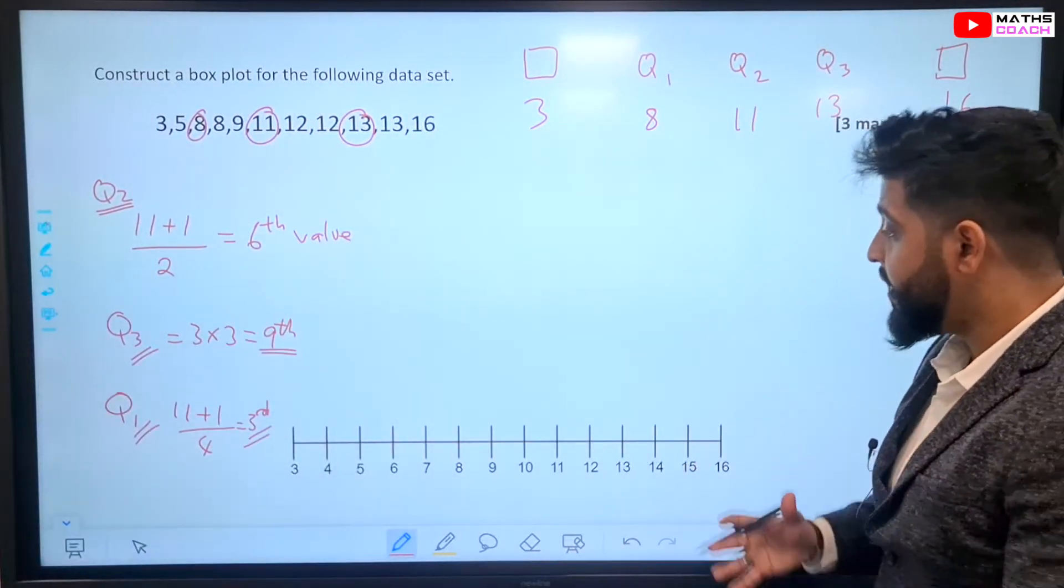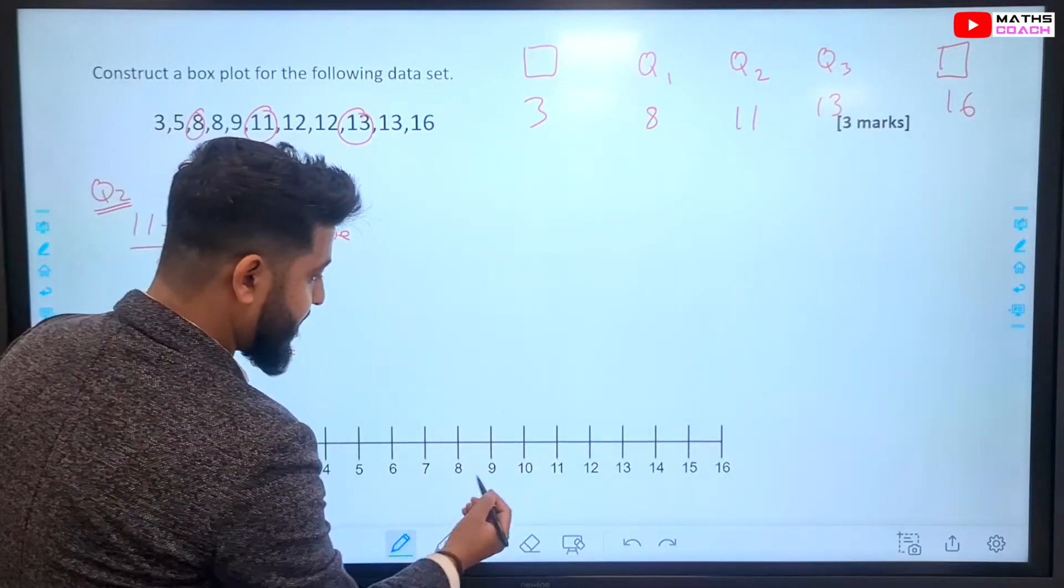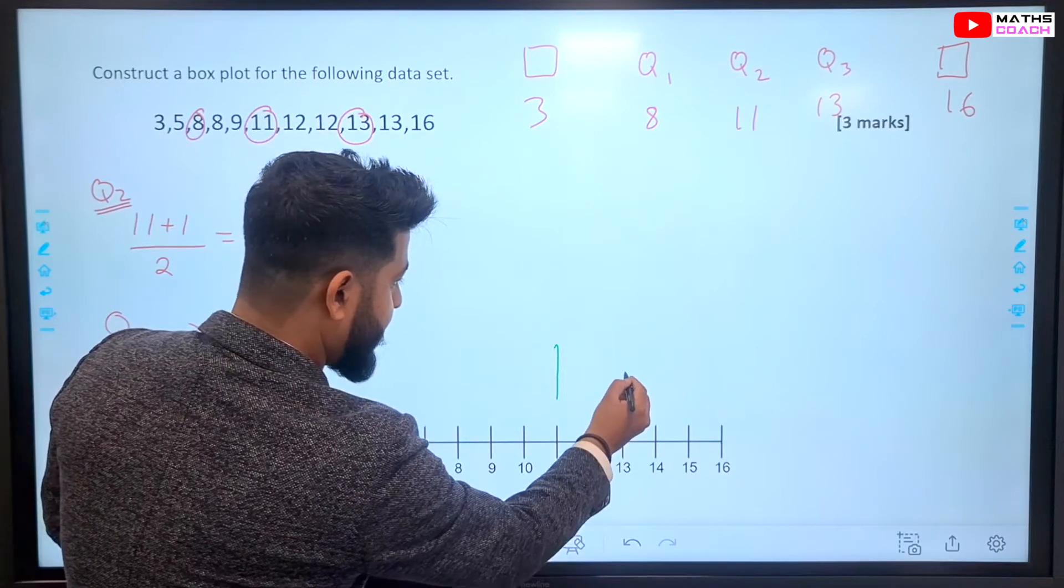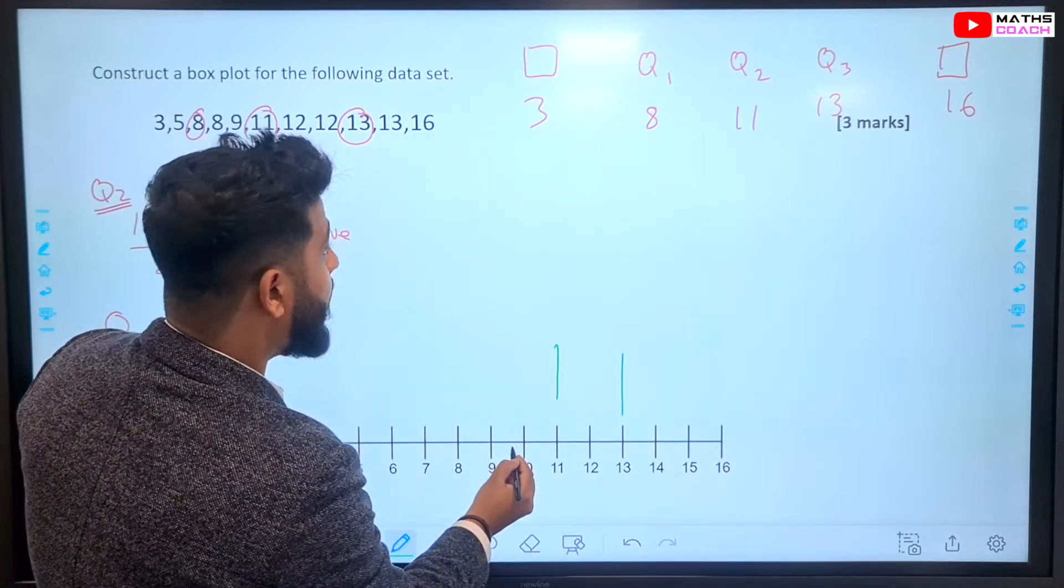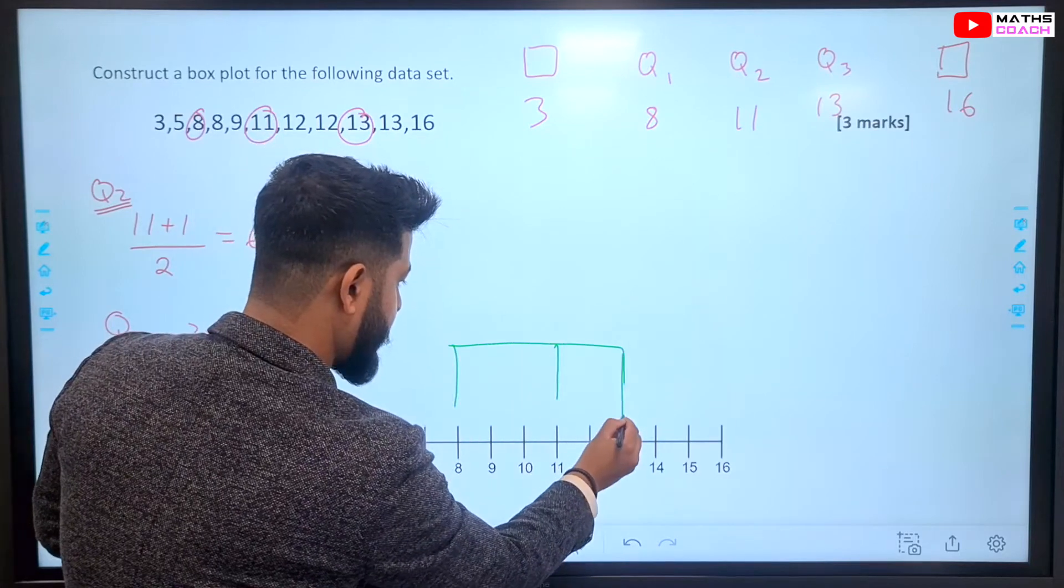All that it leaves us to do now is to plot it on our scale. Let's plot this now. Let's start with the median. So, 11, 13 is our upper quartile, 8 is our lower quartile, and we'll put a box around that now.